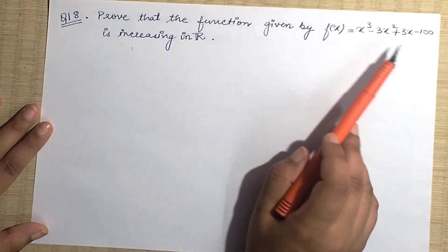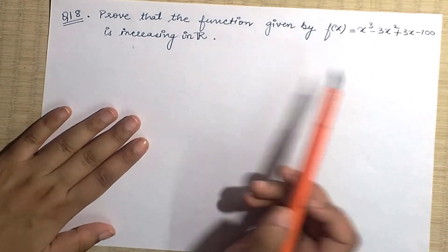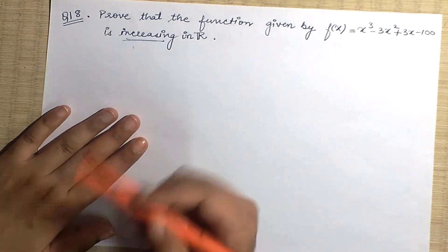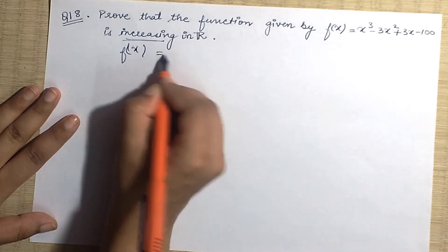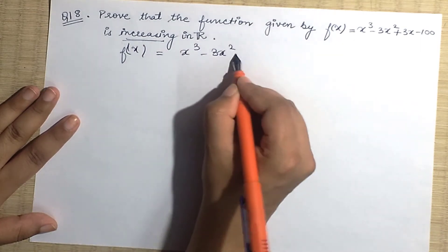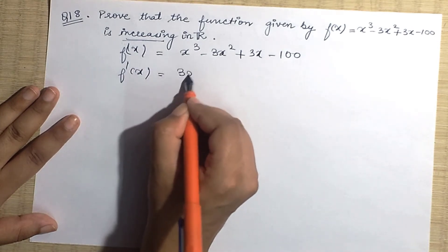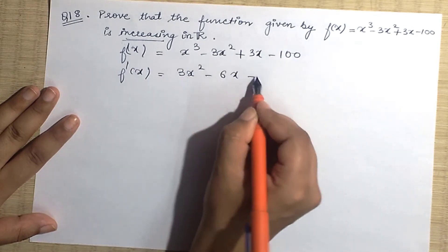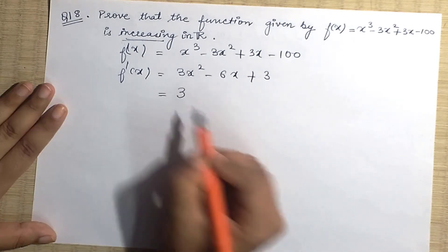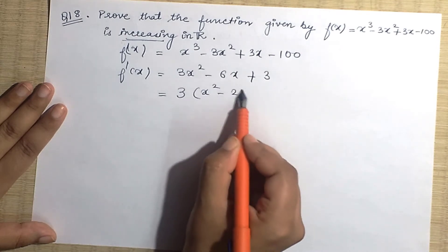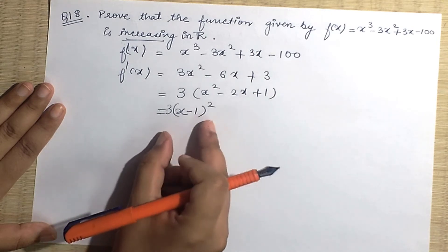Now question number 18: prove that f(x) = x³ - 3x² + 3x is increasing on ℝ. When intervals are not given, you need to find them yourself by differentiating and finding critical points. Differentiating f(x) gives f'(x) = 3x² - 6x + 3. Now if we factor this, taking 3 as common, we get 3(x² - 2x + 1).